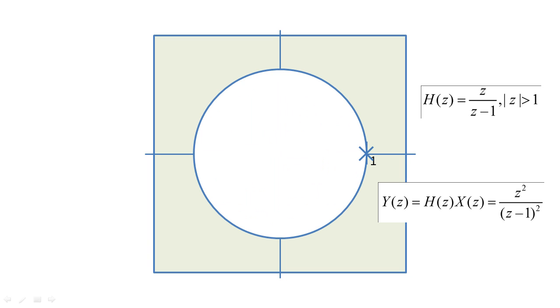To finish this lecture, let's discuss what happens if we have a causal system with a pole on the unit circle. With this system, the impulse response function will equal the unit step.